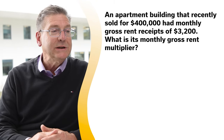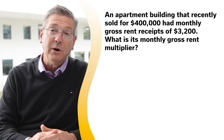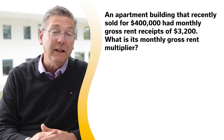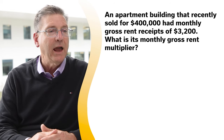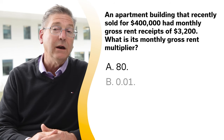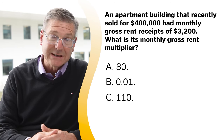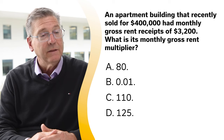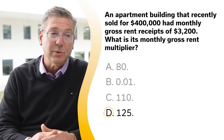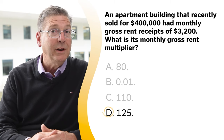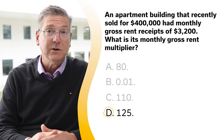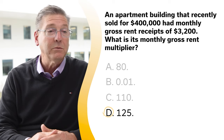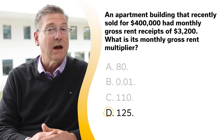An apartment building that recently sold for $400,000 had monthly gross rent receipts of $3,200. What is its monthly gross rent multiplier? A, 80; B, 0.01; C, 110; or D, 125. The correct answer is D, 125. The formula for a gross rent multiplier is the sales price divided by the monthly rent. Therefore, $400,000 divided by $3,200 equals $125.